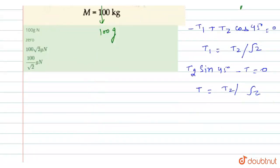So T2 divided by root 2. We have to find the value of T1. T1 equals T2 divided by root 2. So